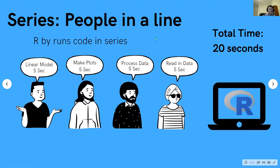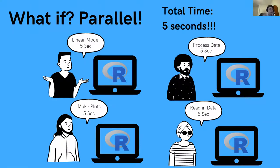That's an example of sequential execution. Now, what if we could give each person their own R computer, and they can run their tasks at the same time? That would take us five seconds — down from 20 seconds to five seconds.